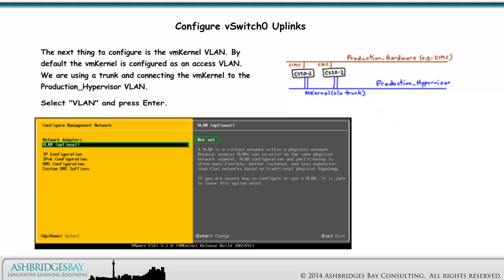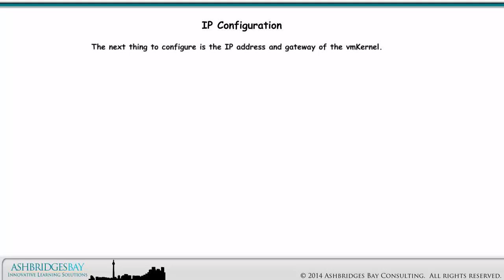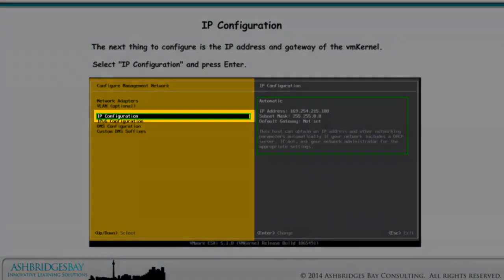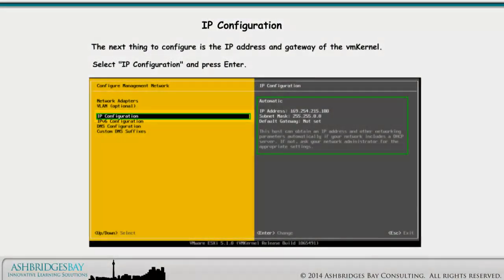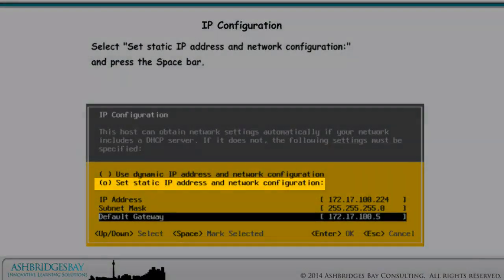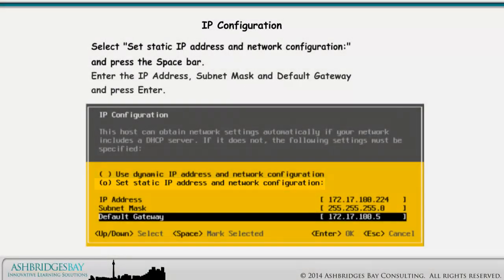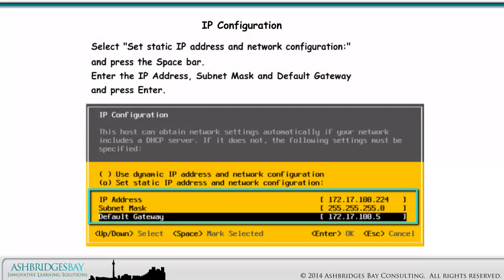Select VLAN and press Enter. The next thing to configure is the IP address and gateway of the VM kernel. Select IP Configuration and press Enter. Select Set Static IP Address and Network Configurations and press the spacebar. Enter the IP address, subnet mask and default gateway and press Enter.